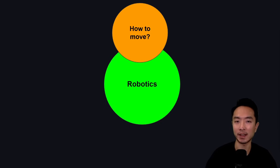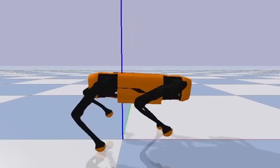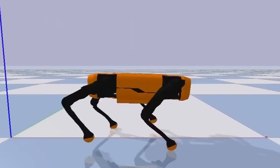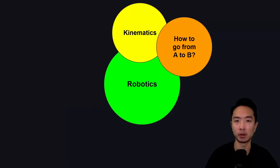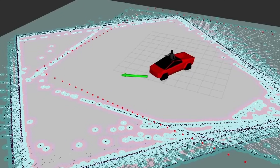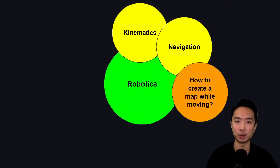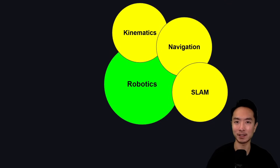The first discipline is how to move, usually described by what's called kinematics. In order for a robot dog to move its legs, we need to implement kinematics to tell where each leg has to go. We also want to know how to go from point A to point B — this is the study of navigation. Next, we want to know how to create a map while moving. This is the study of SLAM, simultaneous localization and mapping.